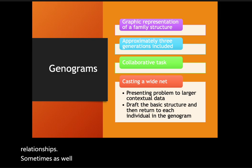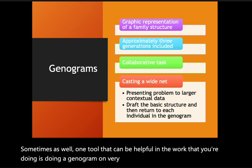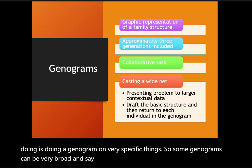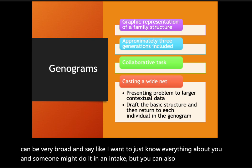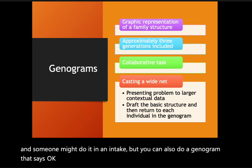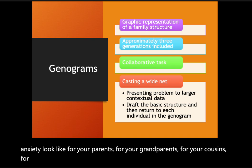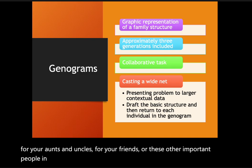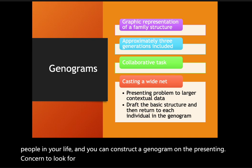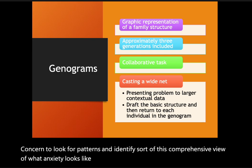One helpful tool is doing a genogram focused on very specific things. Some genograms can be very broad — done at intake to learn everything about the client. But you can also do a focused genogram: for example, if a client comes in with anxiety, you might ask what anxiety looked like for their parents, grandparents, cousins, aunts and uncles, and other important people in their life. You can construct a genogram on the presenting concern to look for patterns and develop a comprehensive view of what that concern looks like across the systems in which the client operates.